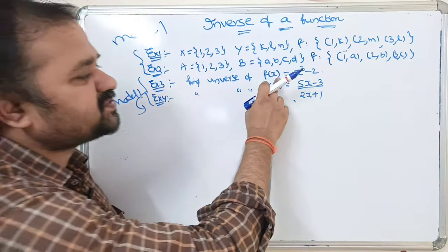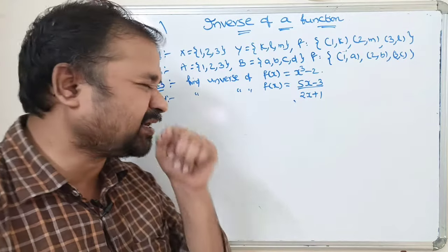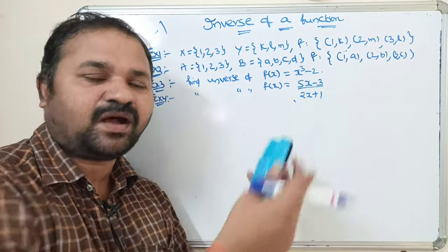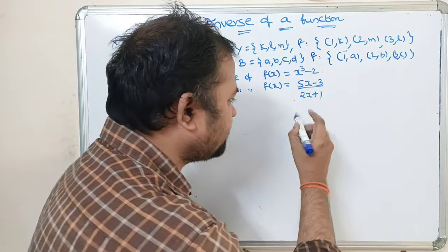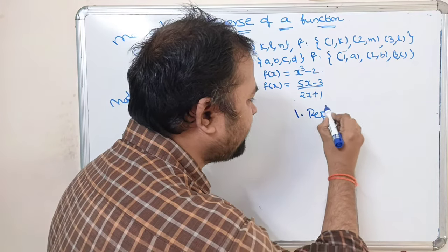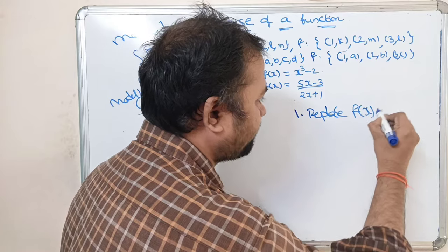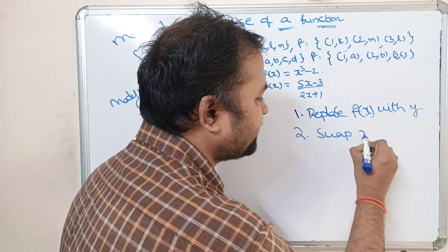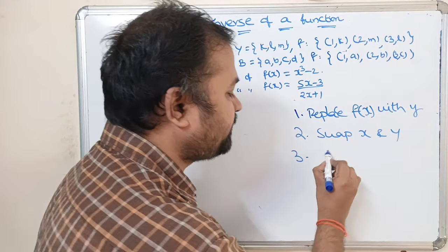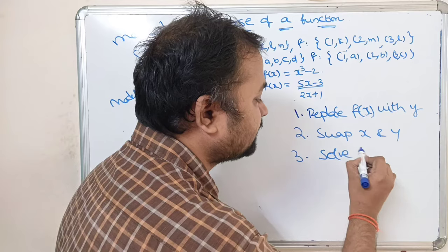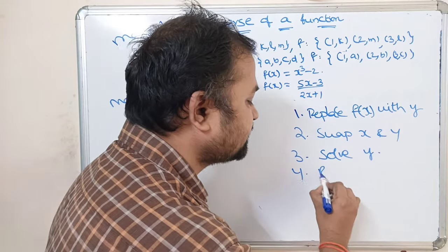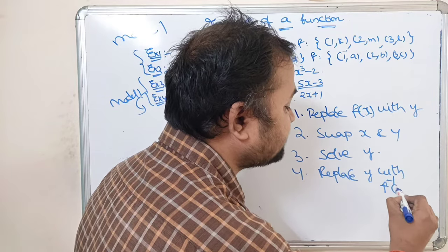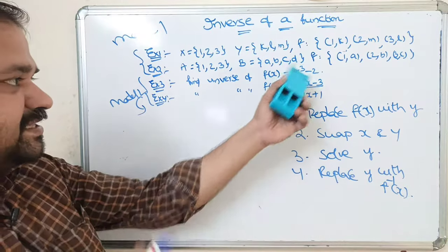Now let us find the inverse of f(x) = x³ - 2. To calculate the inverse for these types of examples we follow 4 steps: Step 1 — replace f(x) with y. Step 2 — swap x and y. Step 3 — solve the equation for y. Step 4 — replace y with f inverse of x.